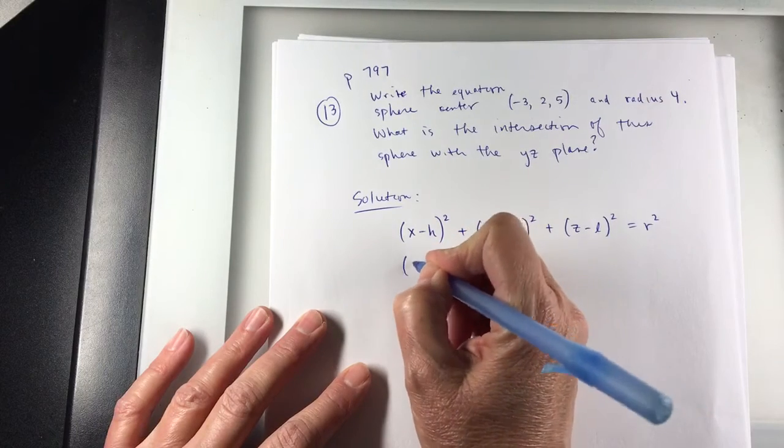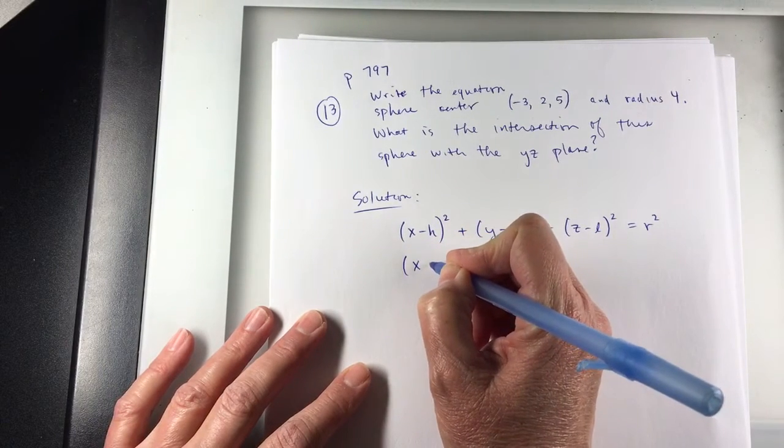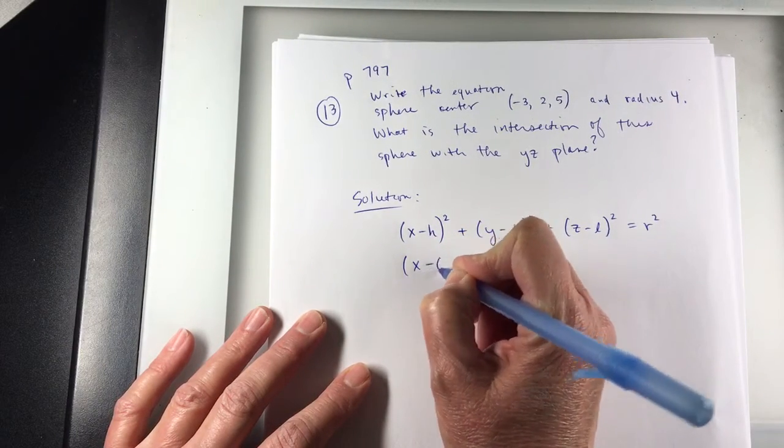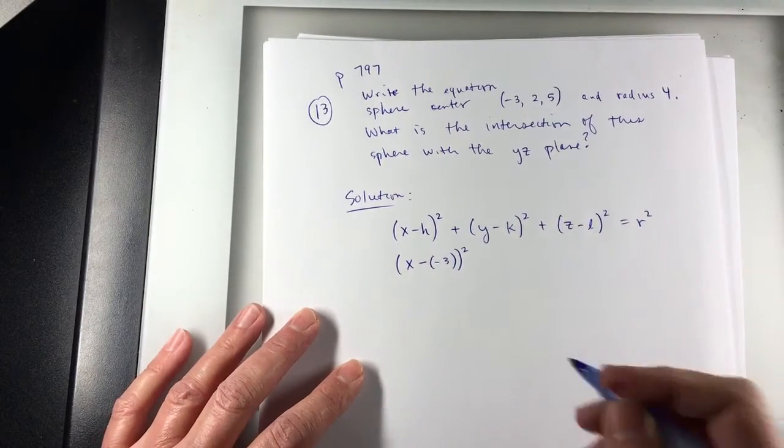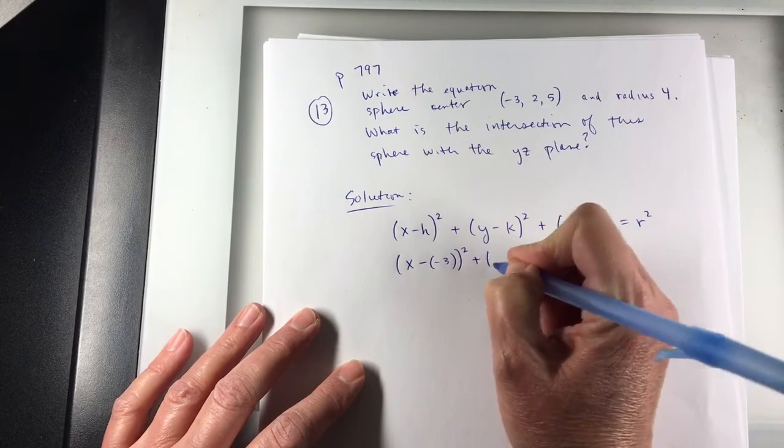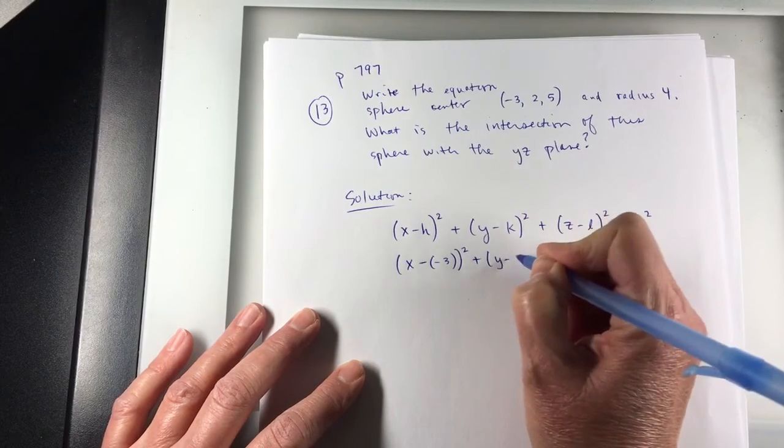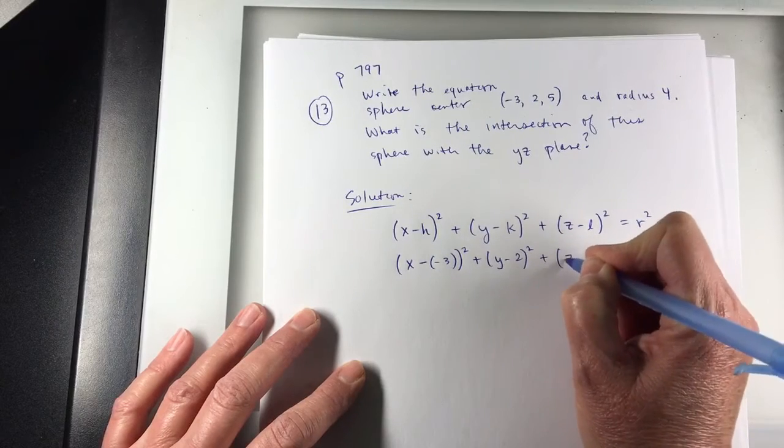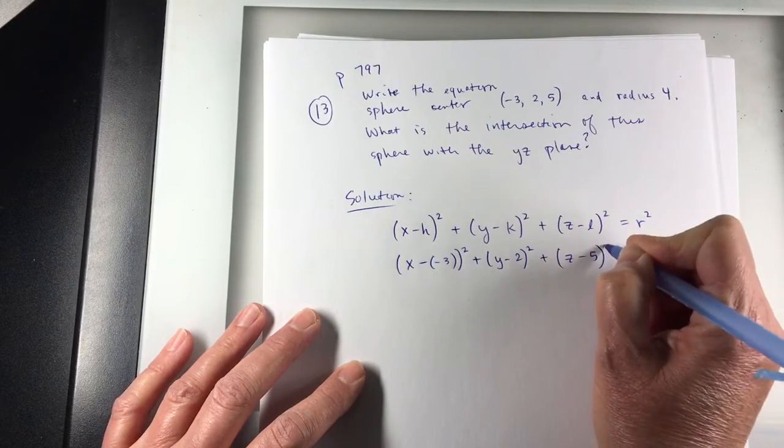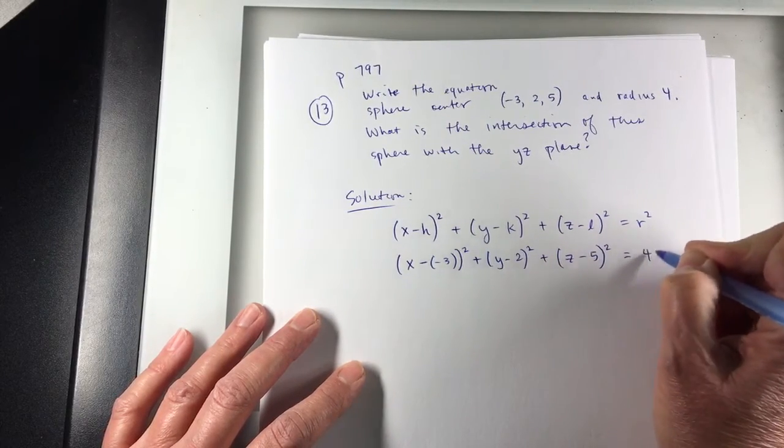So I'm going to get (x - (-3))². I tend to write a lot of steps. Then (y - 2)² plus (z - 5)² equals 4².